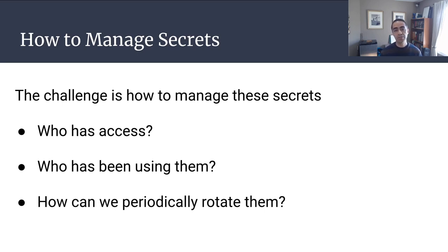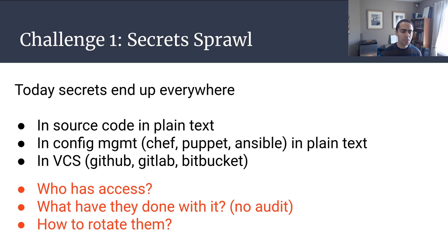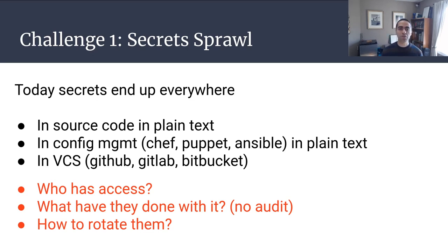Challenge number one is secret sprawl. Secrets can exist in many different places. Developers often hard-code secrets into source code as plain text, and that can make its way all the way to production. Sometimes they're set in configuration management tools such as Chef, Puppet, or Ansible — also in plain text — and they make their way to production as well. Ultimately these secrets get stored in a version control system such as GitHub, GitLab, or Bitbucket, where anyone with access can see them.